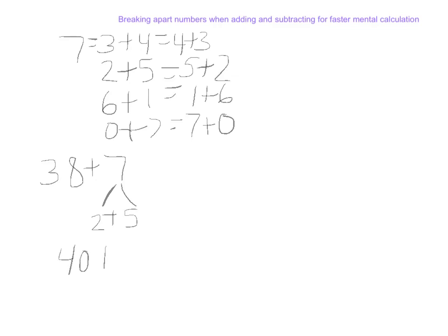38 plus 2 is 40, and then I mentally just need to add the 5 ones, which would give us a sum of 45.